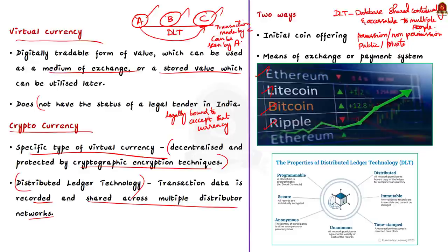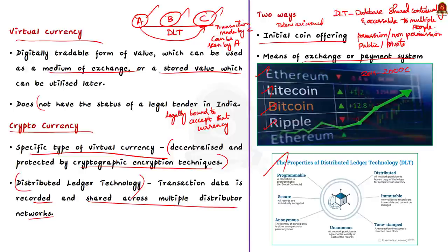There are two principal ways in which cryptocurrencies raise money. First, through Initial Coin Offerings where digital tokens are issued in exchange for other currencies — if you give 100 rupees you get a digital token equivalent to that amount. Second, through using it as a means of exchange or payment system. As of February 2019, there were more than 2,000 cryptocurrencies across the world with a market capitalization of approximately 120 billion US dollars.